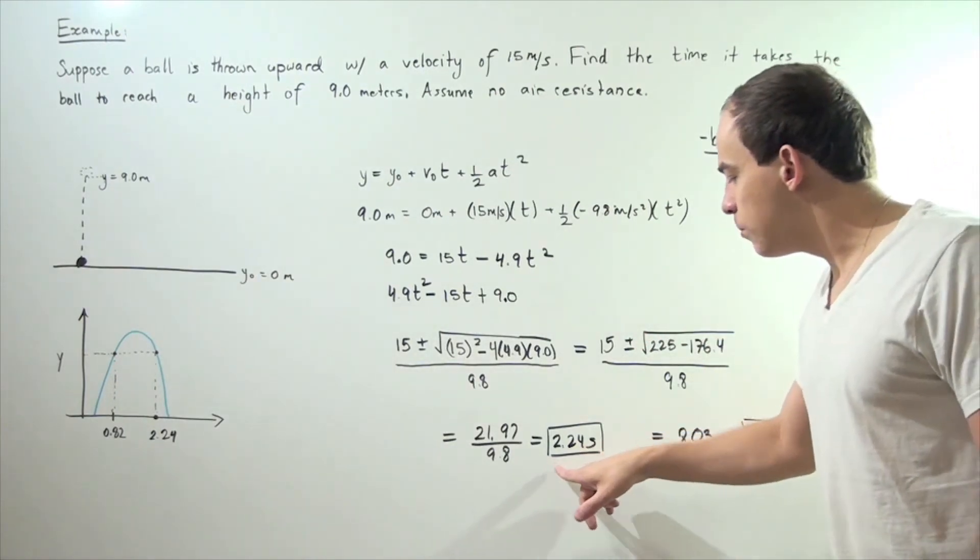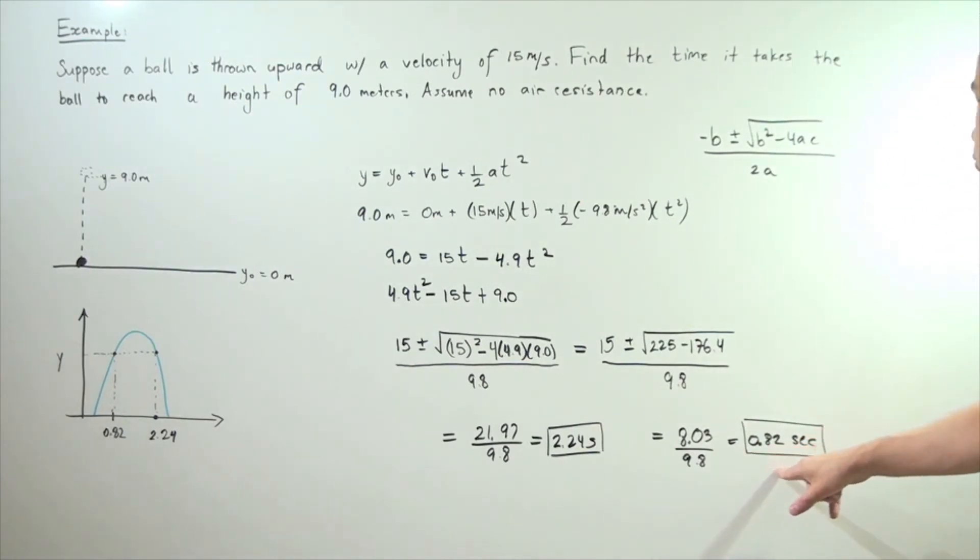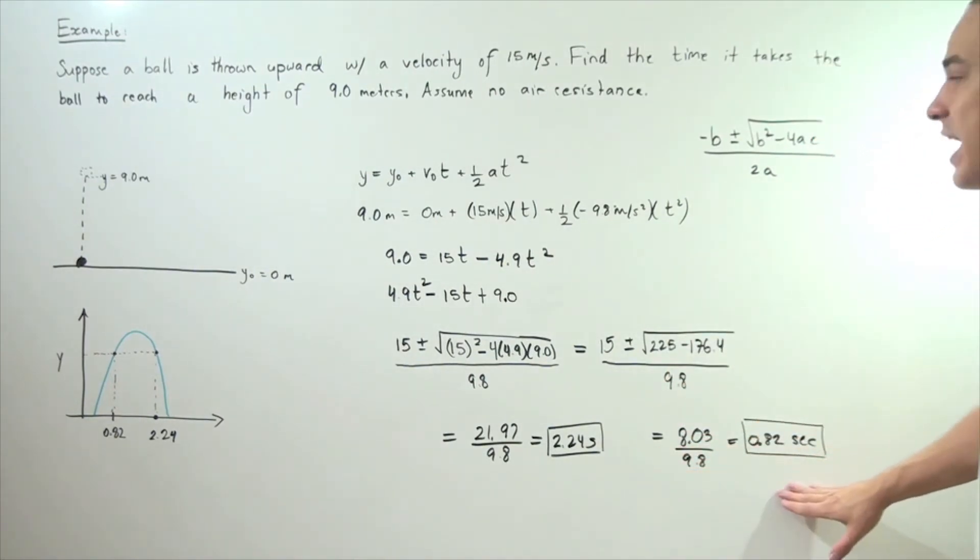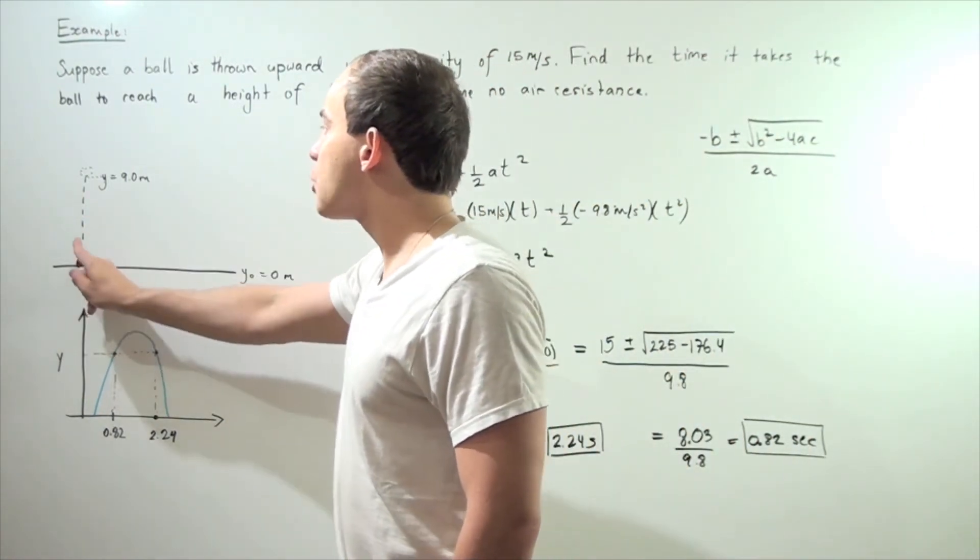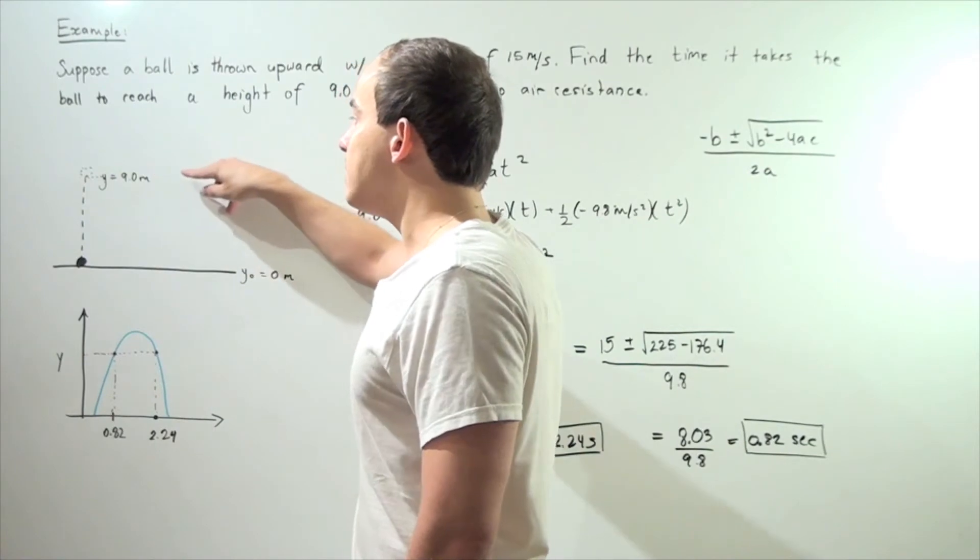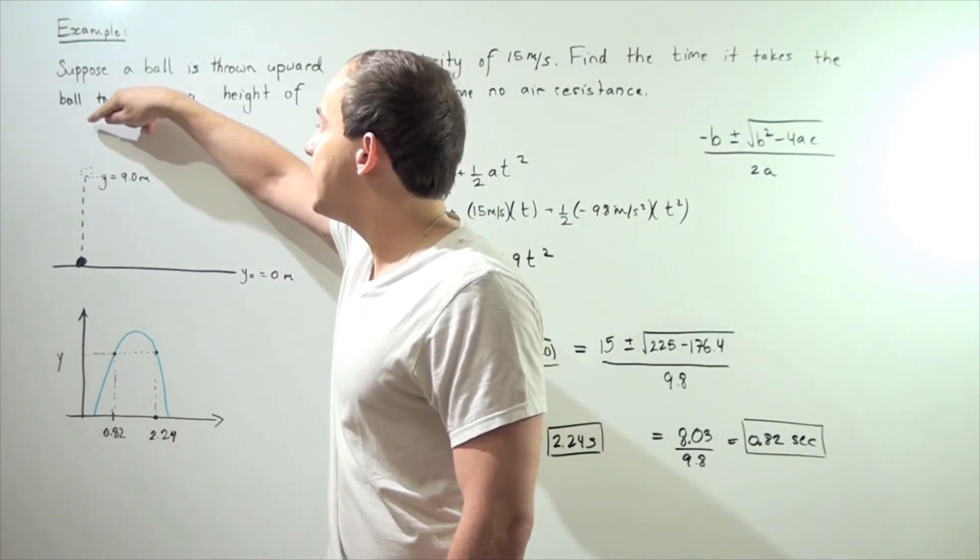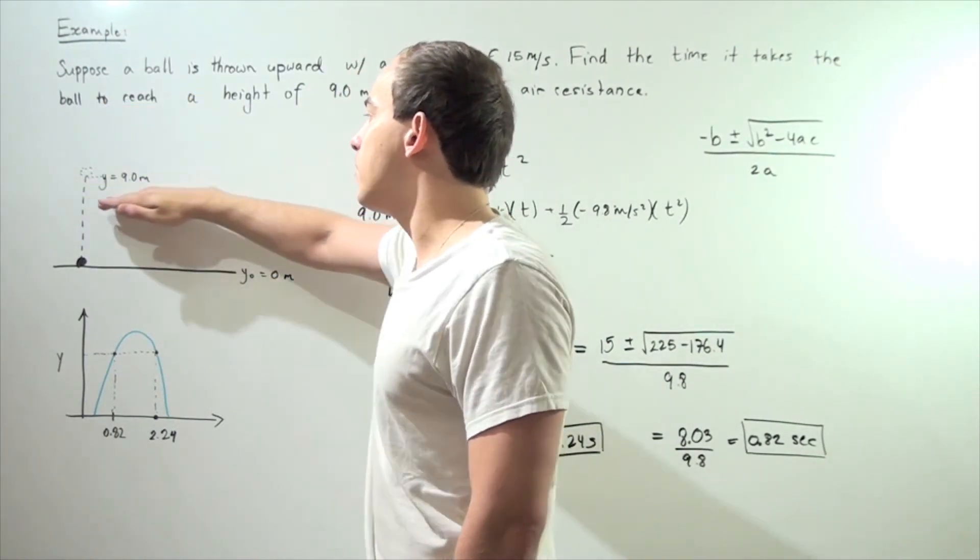One of the values is 2.24 seconds. The second value is 0.82 seconds. Why is it that we have two different values? And are both of these values the answers? The answer is yes. Both of these values are the answers because when the ball blasts off, it goes past this 9 meter height, then stops at the maximum height and begins returning back to the ground. So it actually passes the 9 meter mark twice.